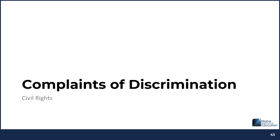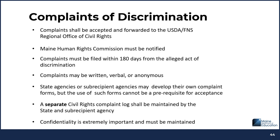Next, let's discuss complaints of discrimination. Complaints shall be accepted and forwarded to the USDA FNS Regional Office of Civil Rights. The Maine Human Rights Commission must be notified. Complaints must be filed within 180 days from the alleged act of discrimination. Complaints may be written, verbal, or anonymous. State agencies or subrecipient agencies may develop their own complaint forms, but the use of such forms cannot be a prerequisite for acceptance. A separate civil rights complaint log shall be maintained by the state and subrecipient agency. Confidentiality is extremely important and must be maintained.